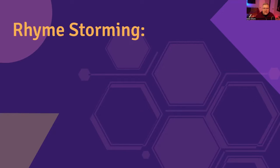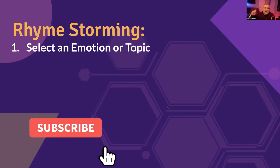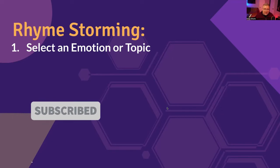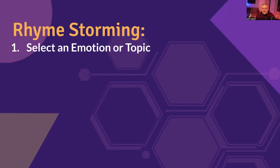I want to give you step by step how you can use rhyme to find more interesting ideas. Step number one: you have to select an emotion or a topic. What is your potential song emotion about? Is it about a feeling? Is it about a sensation? Is it about a topic, like a moment in time? Is it a relationship situation, or some other type of situation? That's step one — select an emotion or topic.